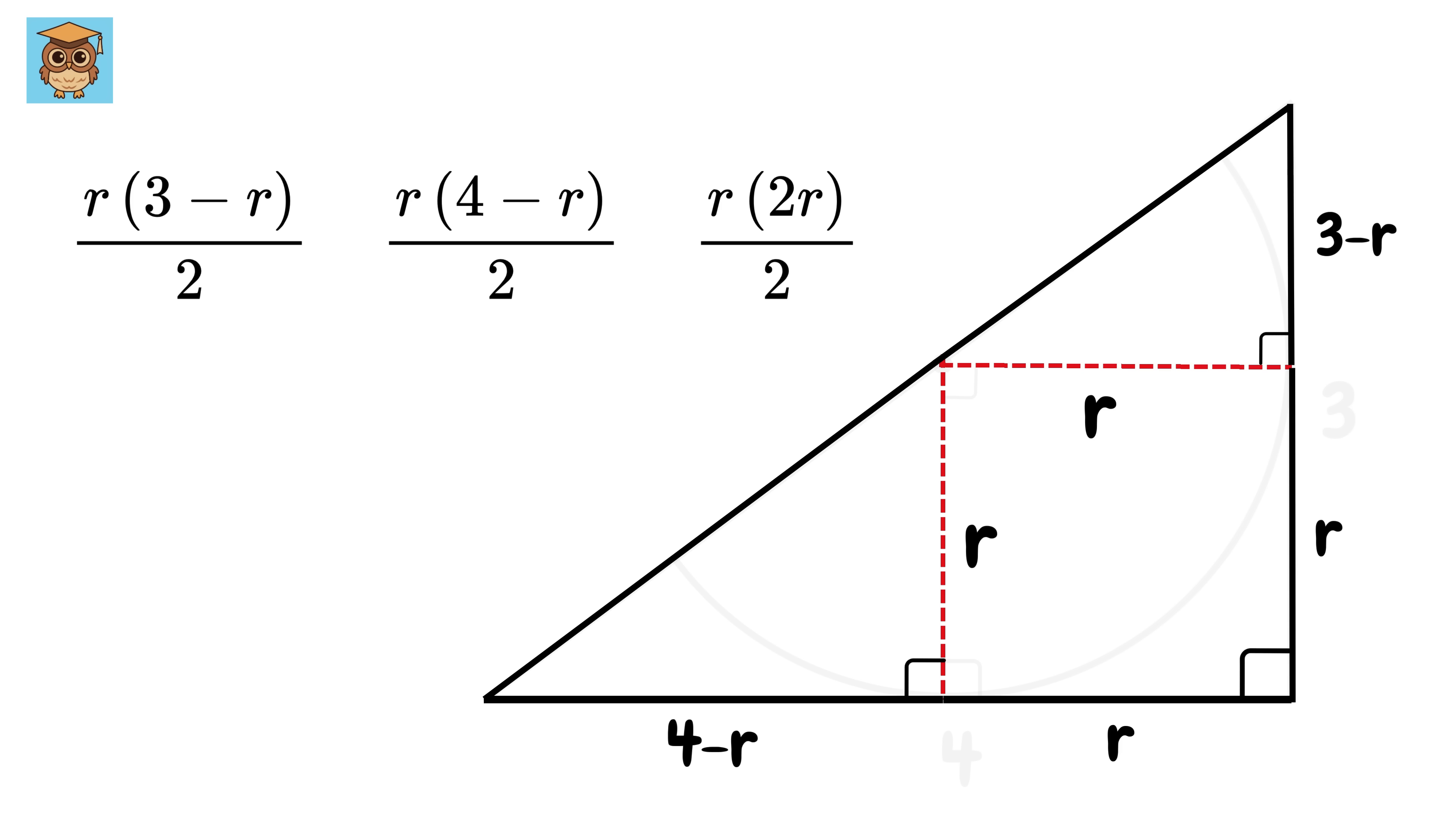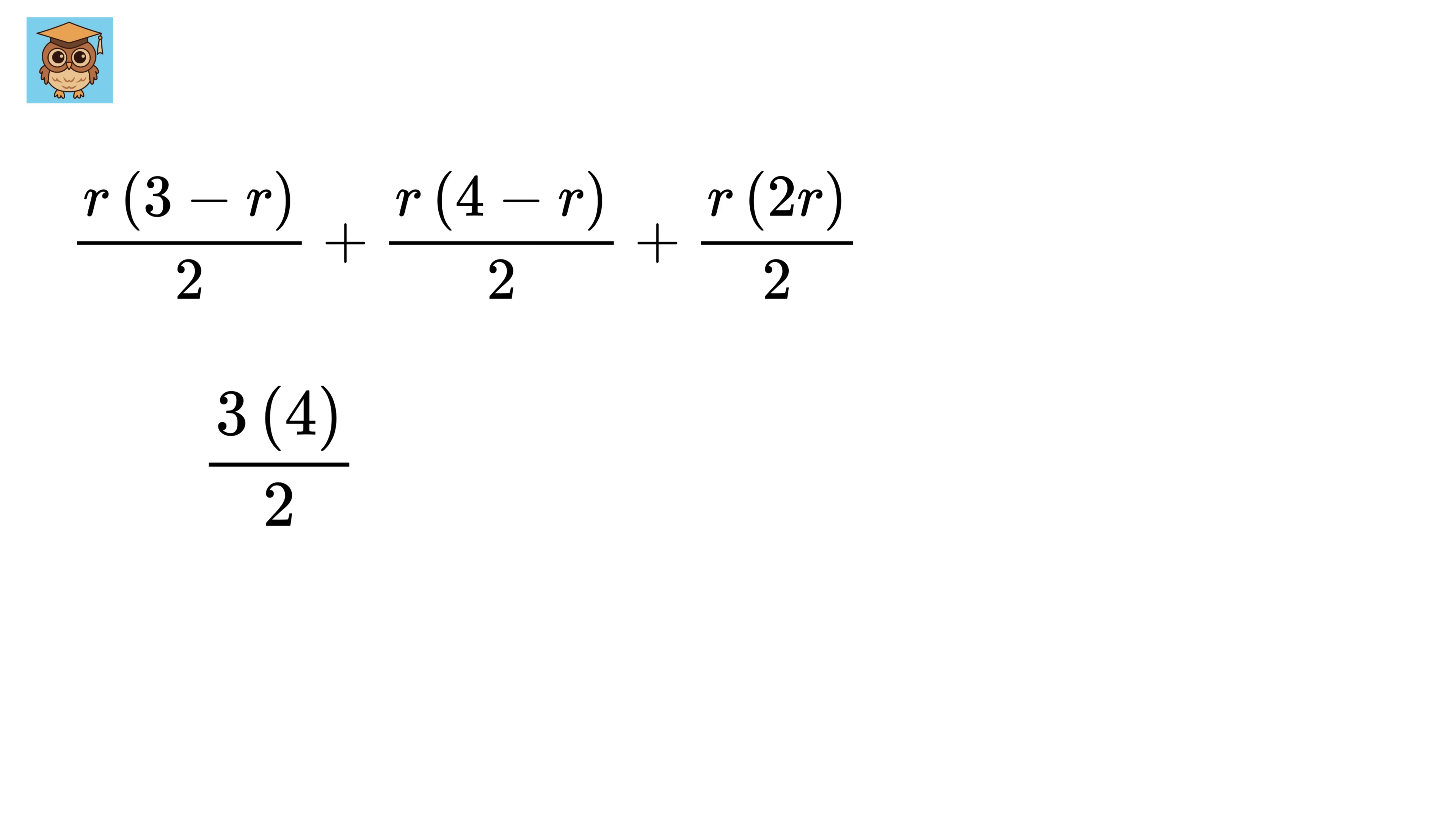So what will be the area of this 3-4-5 triangle? It will simply be the area of this triangle plus the area of this triangle plus the area of this square. So it will be this plus this plus this. But this area is also equal to its base times height over 2, or 3 times 4 over 2, isn't it? Therefore, equate both of them to this.